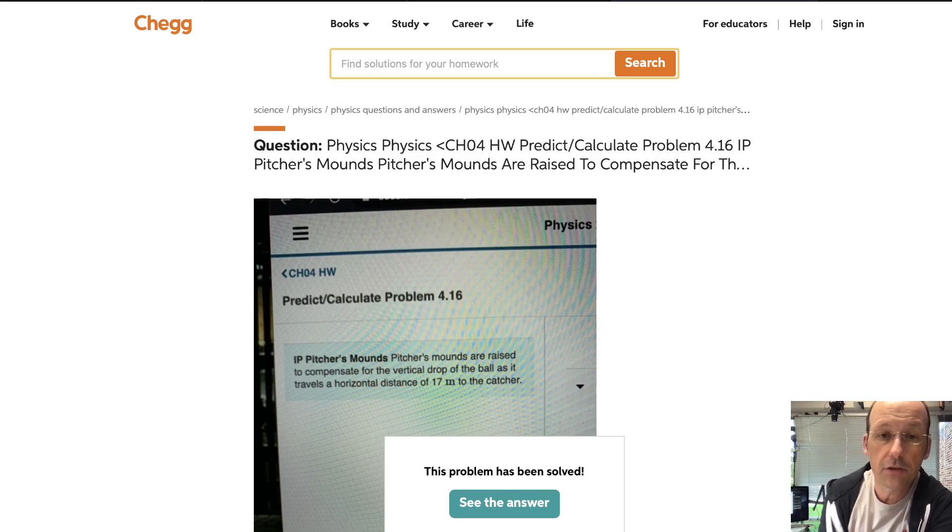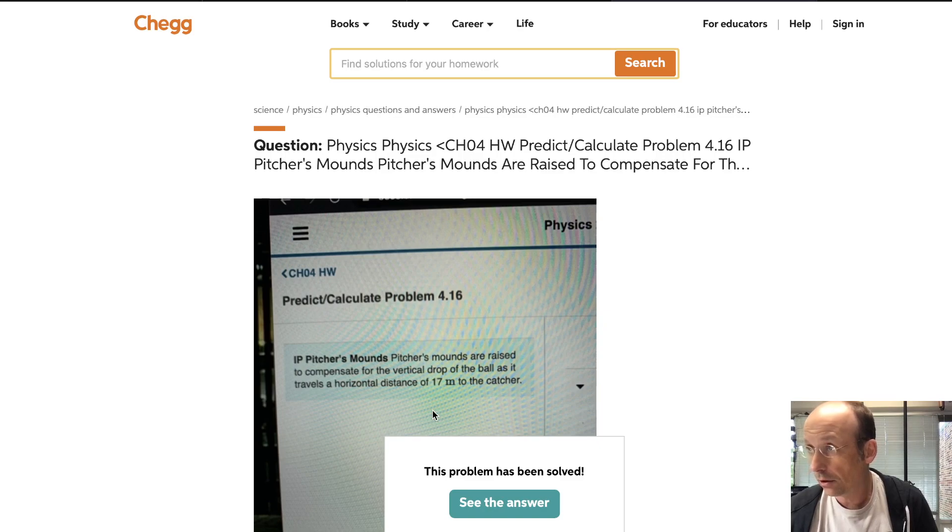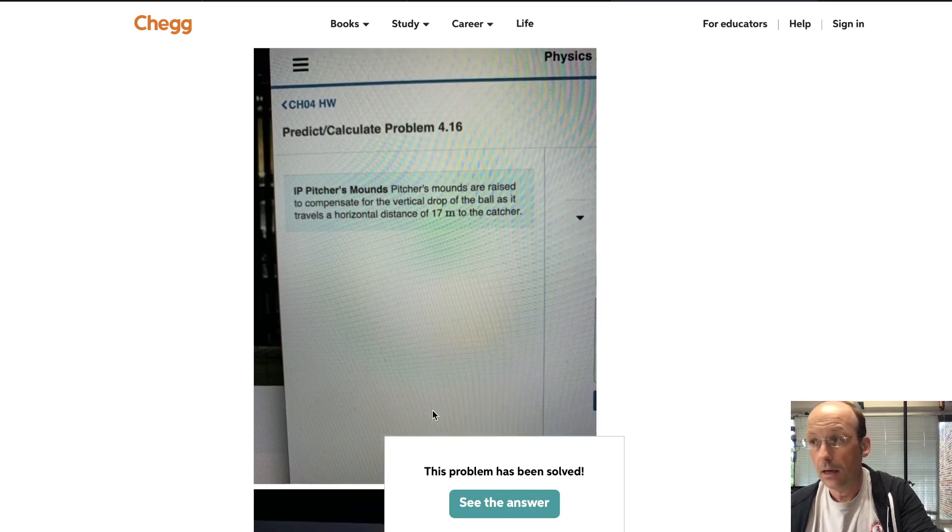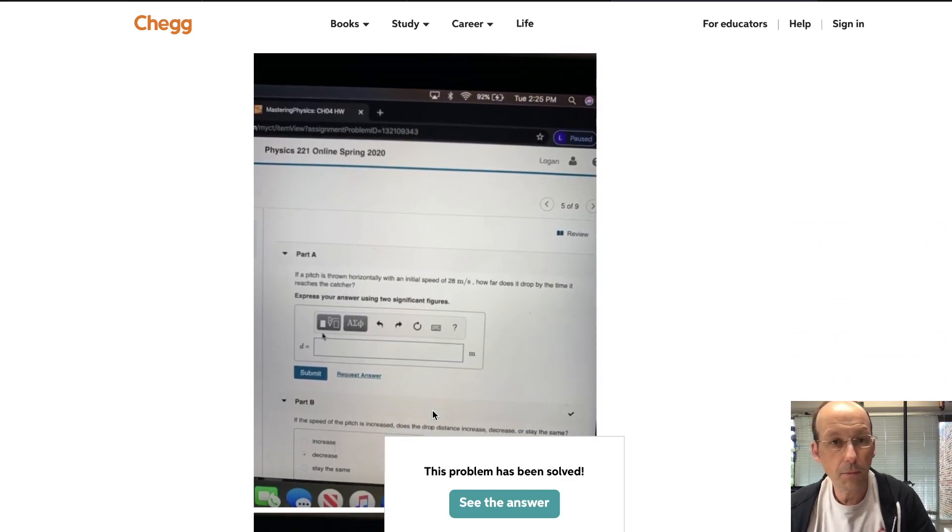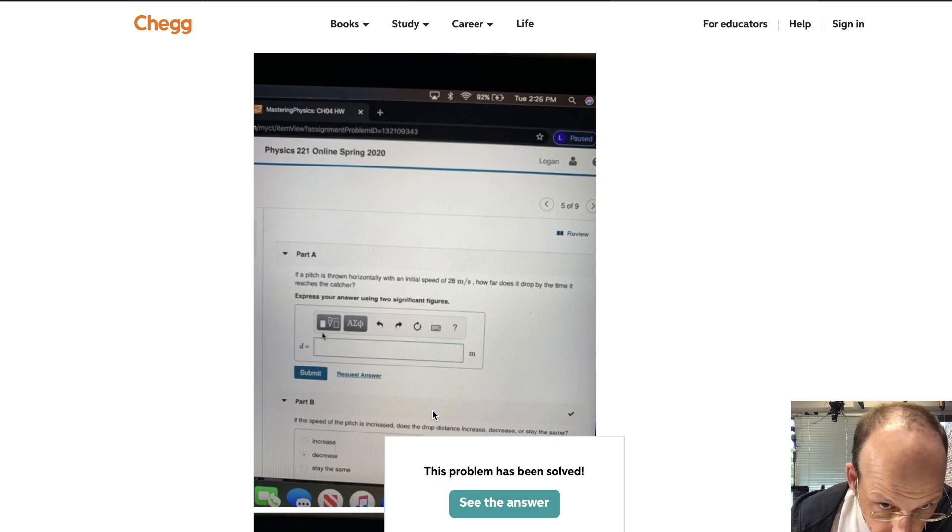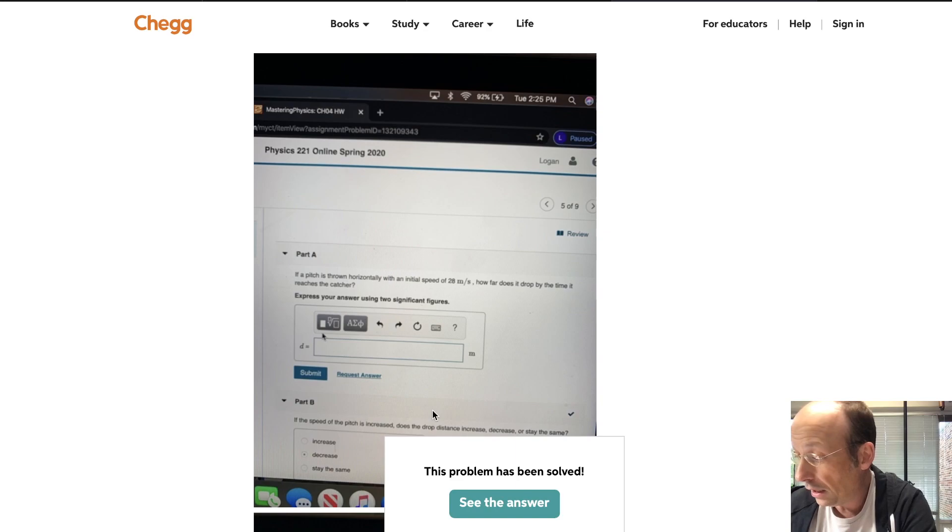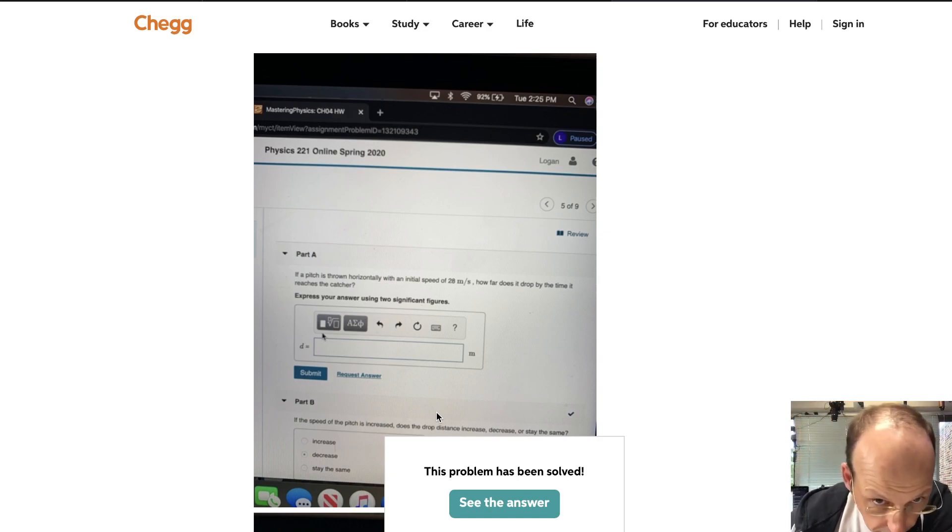So it says a pitcher's mounds are raised to compensate for the vertical drop of balls that travels a distance of 17 meters. I'm going to write that down. I'll call that S, 17 meters. Part A, if the pitch is thrown with a speed of velocity of 28 meters per second horizontally, so Vx0 equals 28 meters per second.